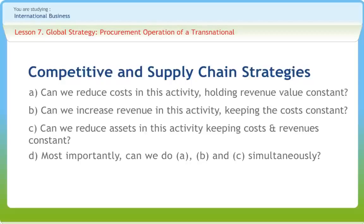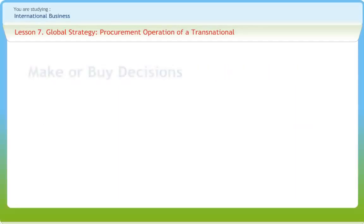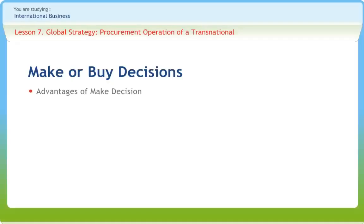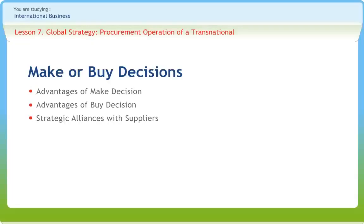To execute a company's competitive strategy, all functions play a role and each must develop its own strategy. One of the critical considerations in supply chain management is make or buy. Globalization has increased the scope of sourcing and made the make-or-buy question more relevant. Advantages of make decisions include lower cost, facilitating specialized investments, proprietary product technology protection, and improved scheduling, while advantages of buy decisions include strategic flexibility, lower costs, and offsets. To reap the benefits of vertical integration without associated operational problems, transnational firms often enter into strategic alliances with essential suppliers.